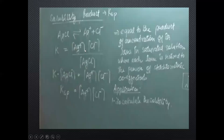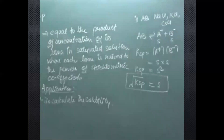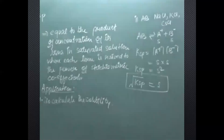The first application of solubility product is that we can calculate solubility from it. For calculating solubility we must first know the type of salt — whether it is AB type, AB₂ type, A₂B type, or AB₃ type — because solubility depends on the formula. For AB type salts, the ratio of A and B elements is 1:1, like NaCl, KCl, AgCl, CsCl.